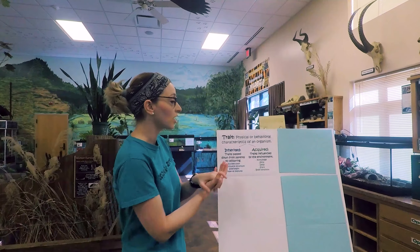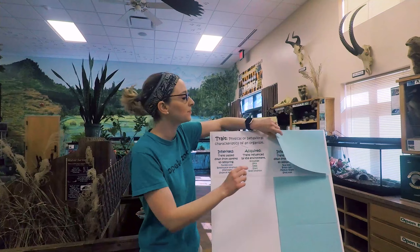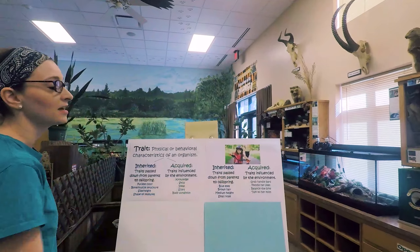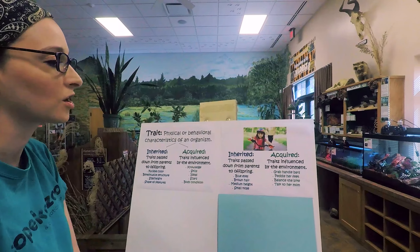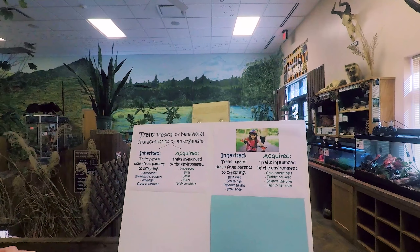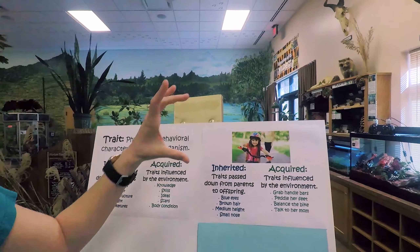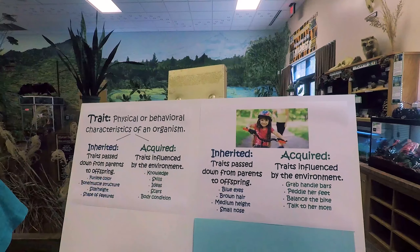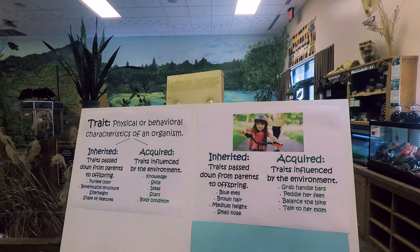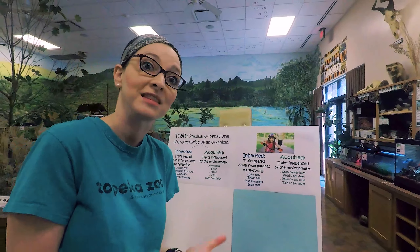Today we will talk about traits that are both inherited and learned from the environment. Let's practice on a human example first, and then we'll talk about this in regard to plants and animals. You can see this is a little girl riding a bicycle. Some of her inherited traits — passed on from her parents — are the fact that she has blue eyes, brown hair, is medium height, and has a small nose. She cannot change these things; they were inherited from her parents. However, there are certain traits in this photo that were acquired from the environment.